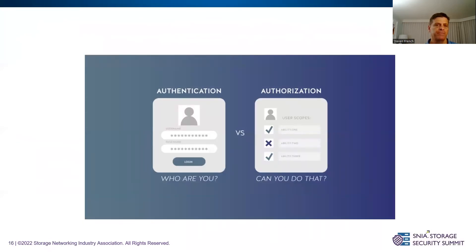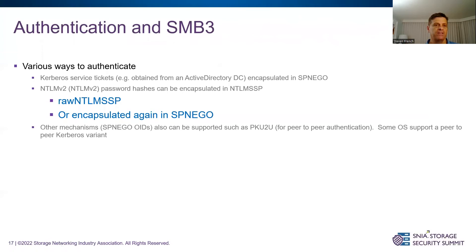Let's dive into some details. First, who are you — authentication. Second, authorization: do you have permission to do that? For authentication, there are two common choices: Kerberos, with tickets usually obtained from Active Directory encapsulated in the internet standard SPNEGO/GSS-API, or NTLMv2, where password hashes — which usually need to be eight characters or longer to be secure enough — are used. NTLMv2 passwords can be encapsulated in NTLM-SSP and then in SPNEGO. There are also other mechanisms — you can specify inside SPNEGO GSS-API standard OIDs for other protocols like PKU2U.